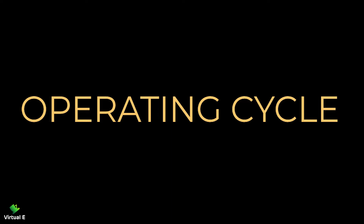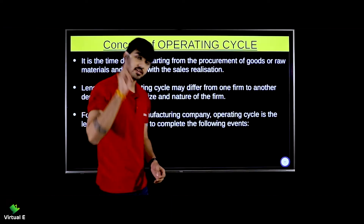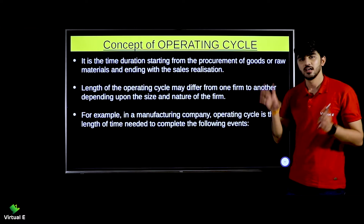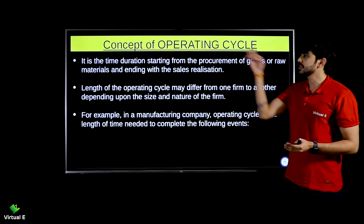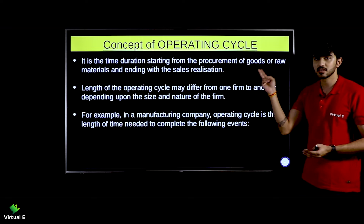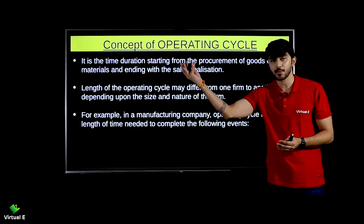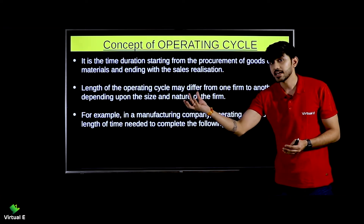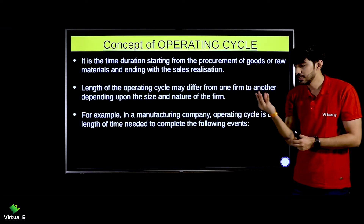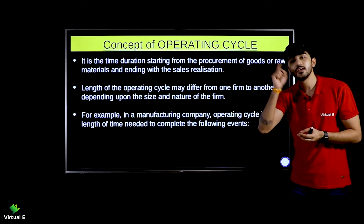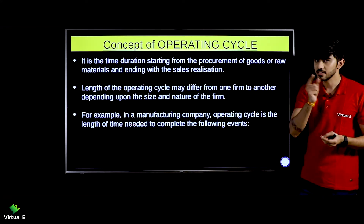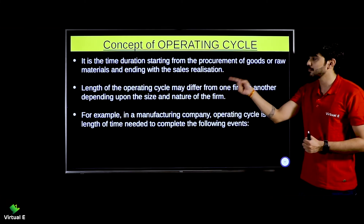Now let's understand what is the operating cycle. The operating cycle is the same thing as the production cycle. It is the time duration starting from the procurement of goods or raw materials and ending with sales realization. You start from your money, purchase raw materials, go through the cycle, get sales, and when you have the money you have realized the sales. The start is purchasing raw materials and the end is sales realization.